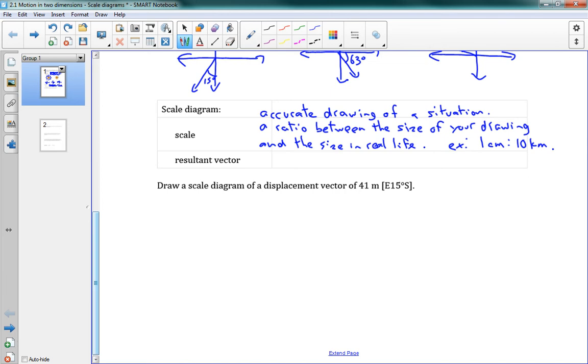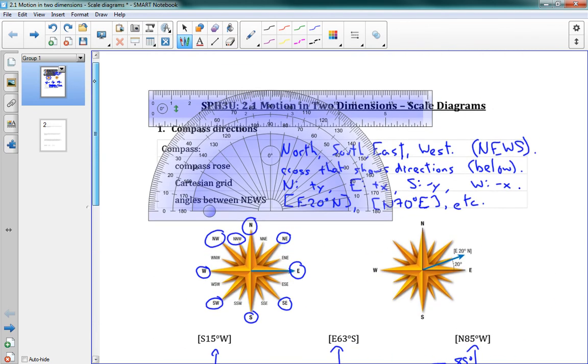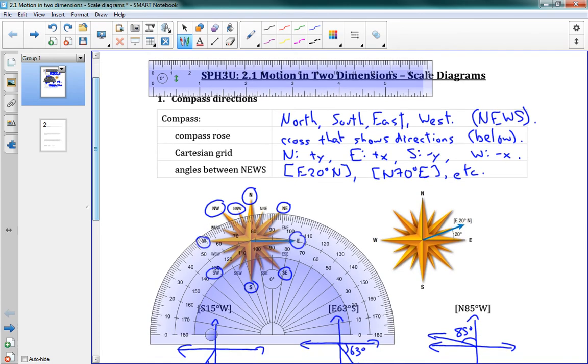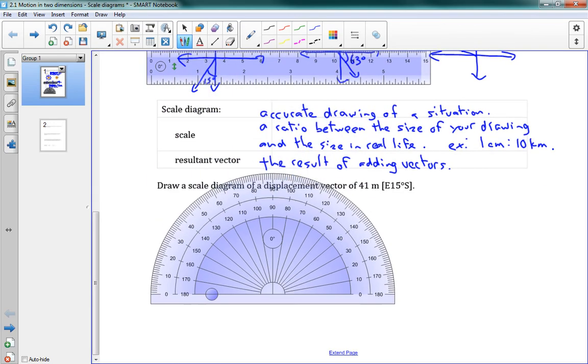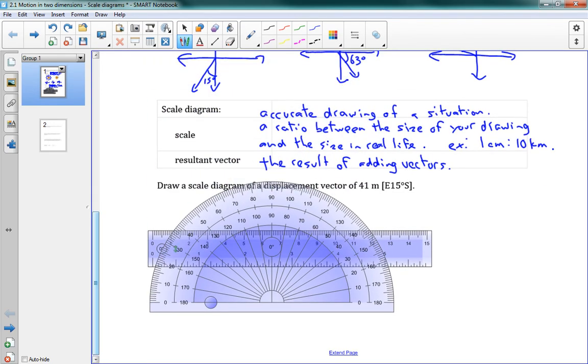The final term here is resultant vector. This is the result of adding vectors. Let's go ahead and try one of these problems. It says draw a scale diagram of a displacement vector of 41 meters east 15 degrees south. For this, you need your ruler and you need your protractor. And if you don't have a protractor already, you're going to need to go out and get one because this lesson requires one.